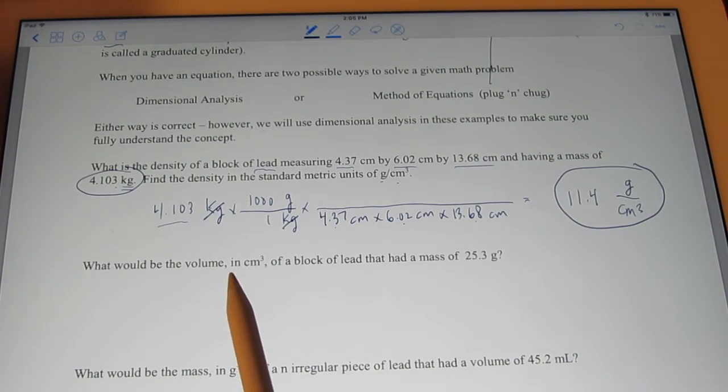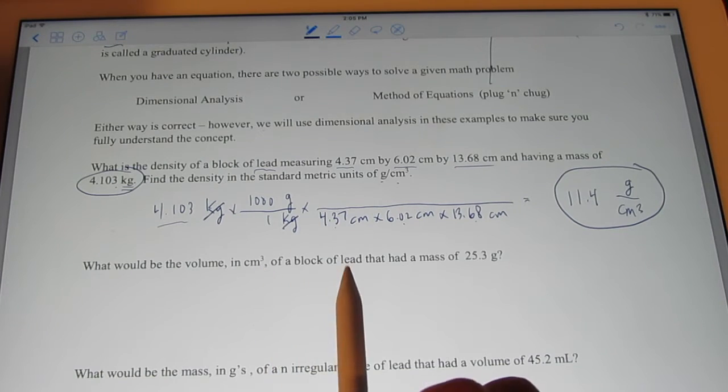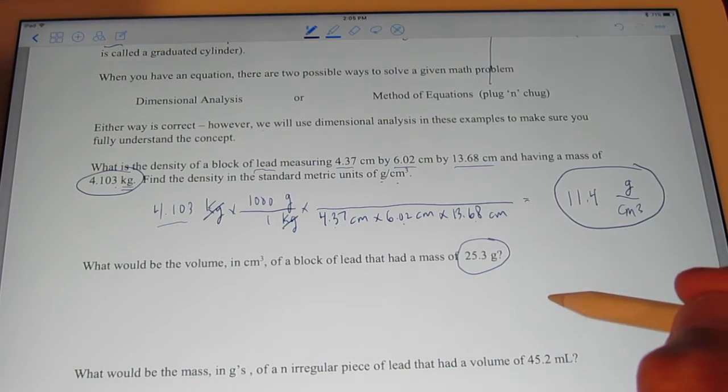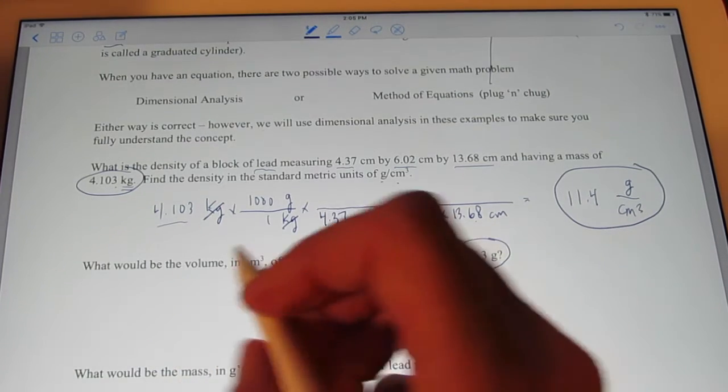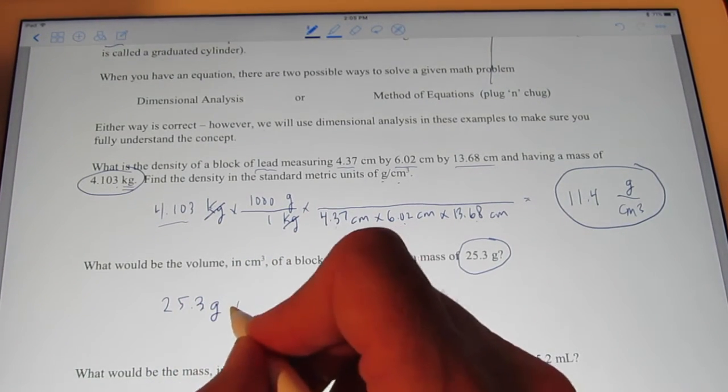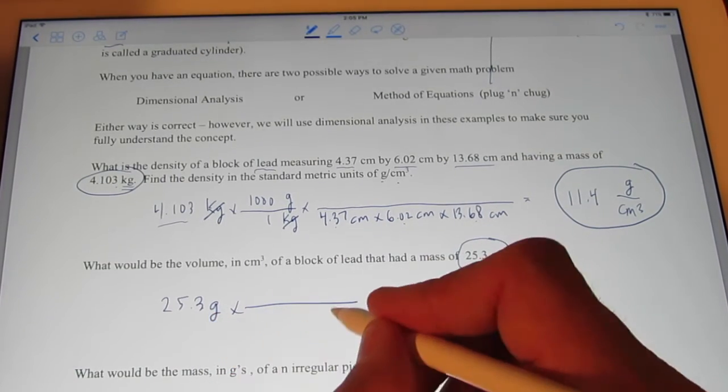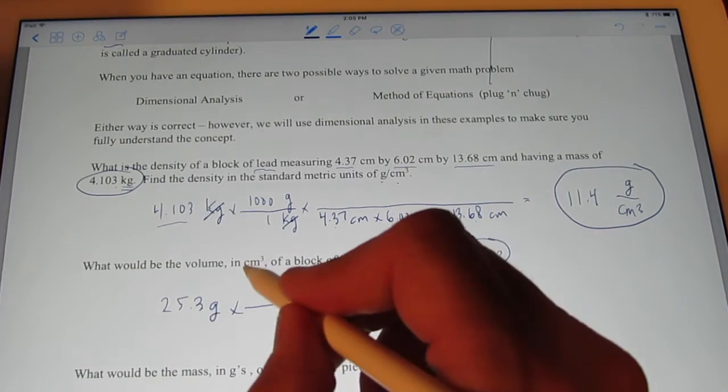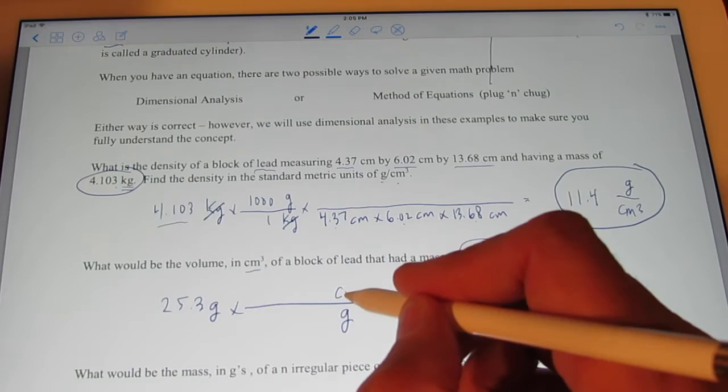What would be the volume in cubic centimeters of a block of lead that has a mass of 25.3 grams? Well, let's start with what I know. 25.3 grams, right? And I want to get out of grams. So, let's put that on the bottom, kiddos. And I want to get into cubic centimeters. Let's put that on top.